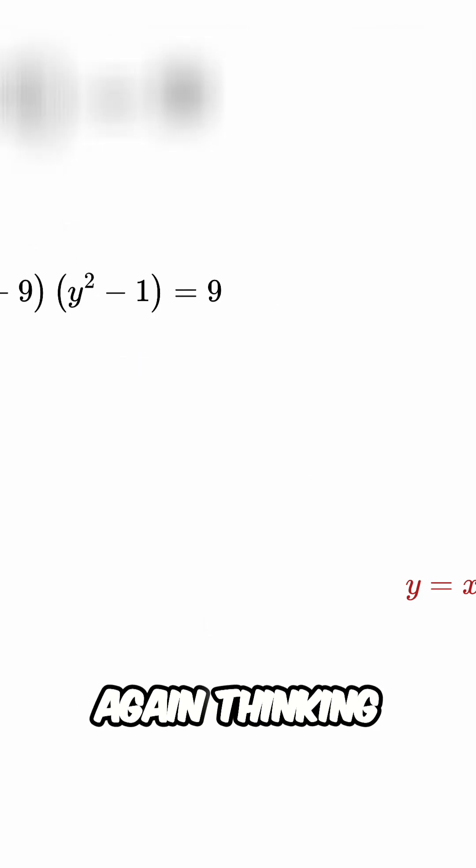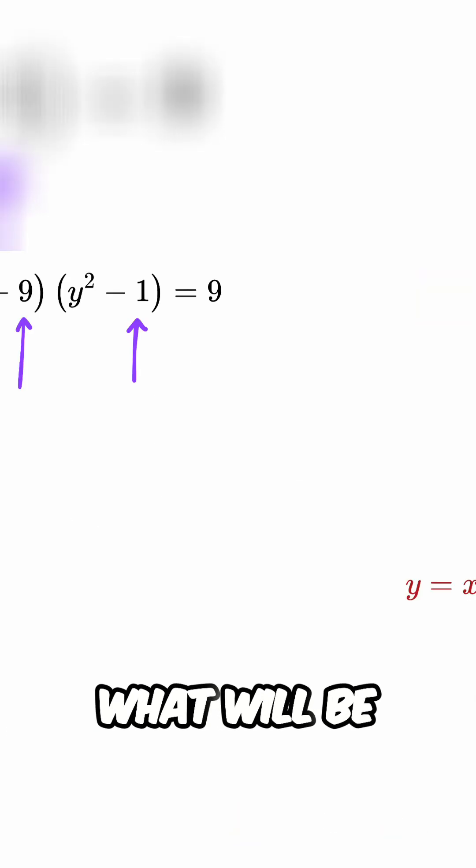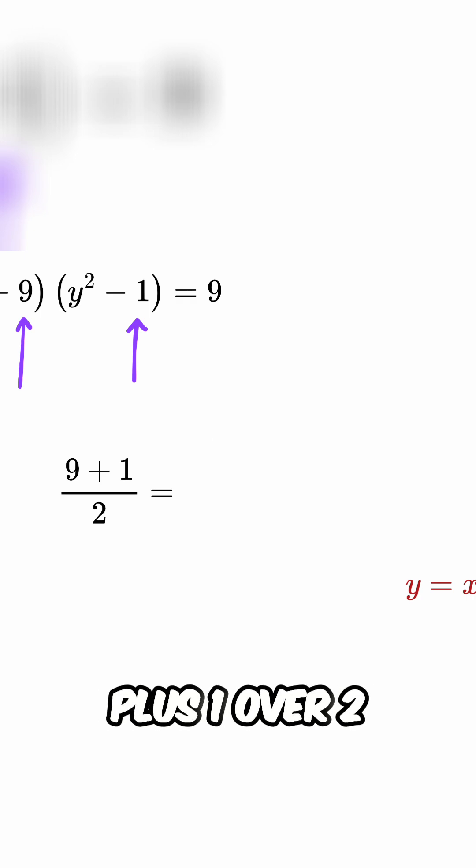Are you again thinking of expanding this? Hold on, we can again reduce it into a nicer form. What will be the average of 9 and 1? It will be 9 plus 1 over 2 or 10 over 2, which is 5, right?